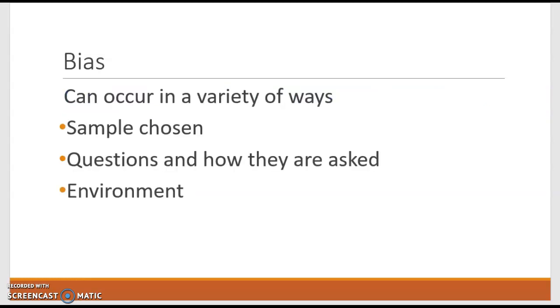When we talk about bias in general, this can occur in a lot of different ways. The sample chosen—if you're using convenience sampling, picking people where it's convenient for you as the sampler, not where you're getting the best people. Bias in questions and how they are asked—if you ask leading questions or add words to make them think, like 'Do you support hurting animals?' No person in their right mind would say yes to that. And the environment—if you put people in a different environment, it could possibly change how they answer questions.